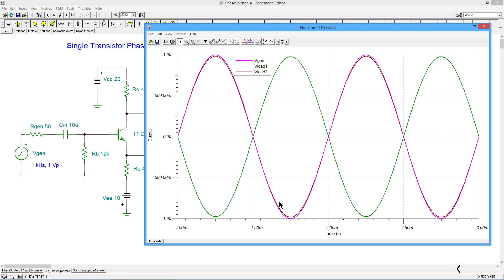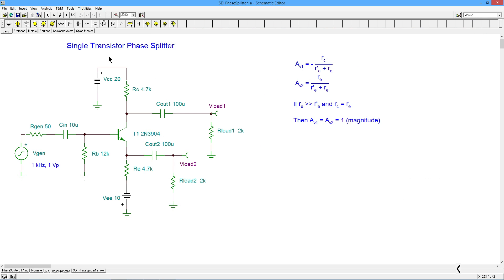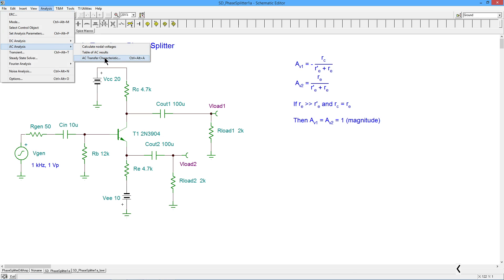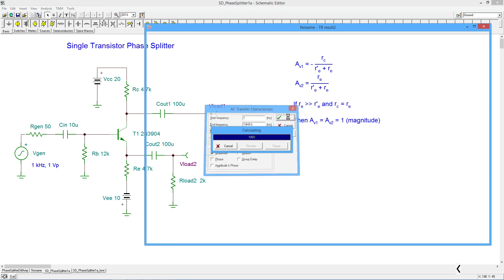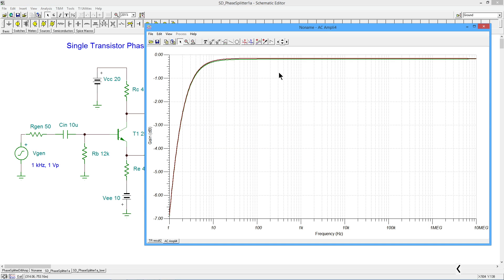The amplitudes compared to each other, load one compared to load two, right on the money. So we're looking good with that. Now, take a quick look at the AC analysis. We do want a decently wide bandwidth over here. Okay, so we can see, well, the top end on this is going probably beyond 10 megahertz. This is just starting to deviate up here around 10 megahertz on the bottom end. Notice the scale on here. One, two, three. Here's three dB down right here.